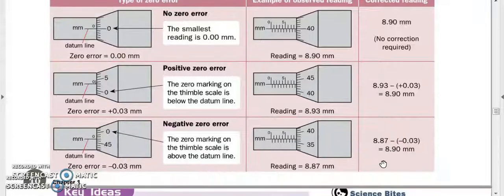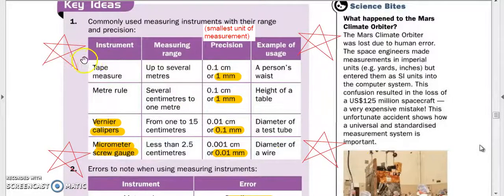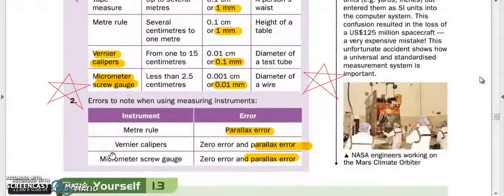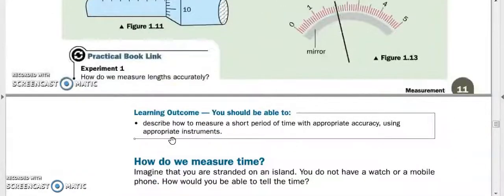There may be zero error in your micrometer screw gauge. Commonly used instruments: tape measure and meter rule have precision of one millimeter, vernier calipers 10 times that at 0.1 millimeter, and micrometer 10 times the vernier calipers at 0.01 millimeter - that's very precise. Errors to take note of: all three have parallax error, only zero errors are for measuring instruments like the vernier calipers and the micrometer screw gauge.